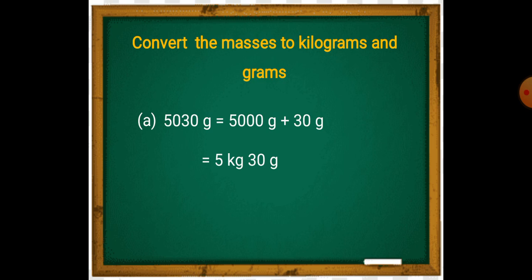5,000 grams is equal to 5 kg. So 5,000 grams plus 30 grams is equal to 5 kg and 30 grams.